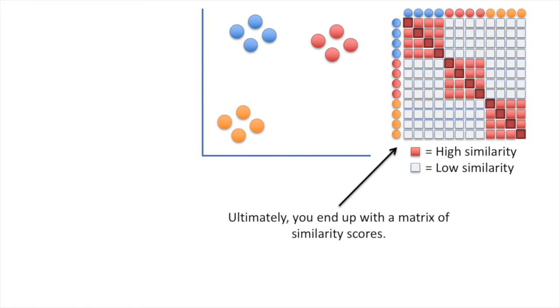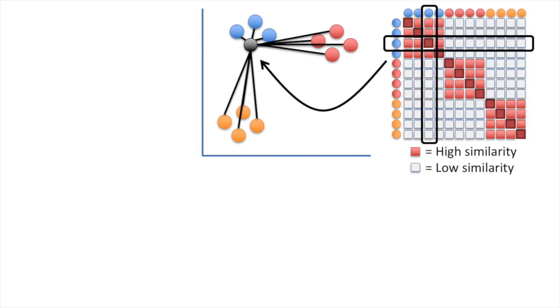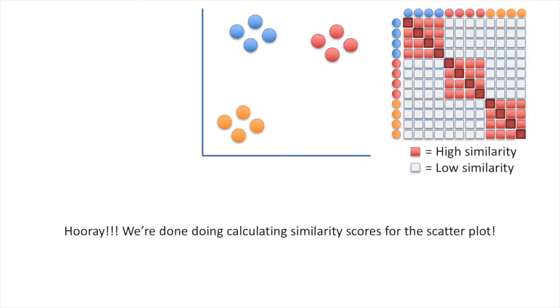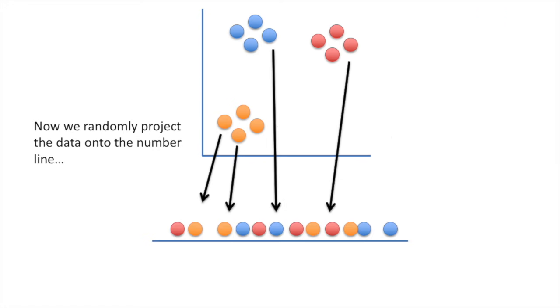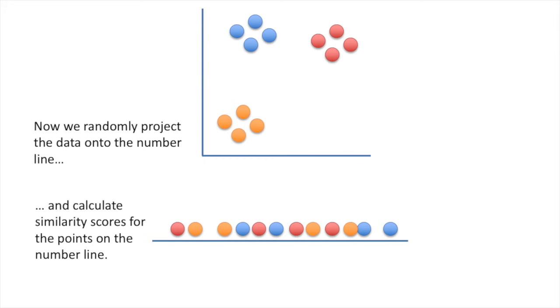Ultimately, you end up with a matrix of similarity scores. Each row and column represents the similarity scores calculated from that point of interest. Red equals high similarity, and white equals low similarity. I've drawn the similarity from a point of interest to itself as dark red. However, it doesn't really make sense to say that a point is similar to itself, because that doesn't help the clustering. So t-SNE actually defines that similarity as zero. Hooray! We're done calculating similarity scores for the scatterplot. Now we randomly project the data onto the number line, and calculate similarity scores for the points on the number line.